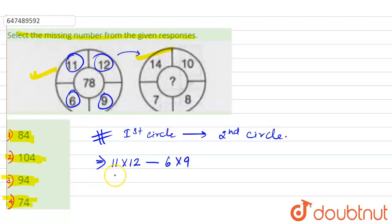So here we will see what happens. 11 times 12, how much is it? 132. And 6 times 9, how much is it? 54.